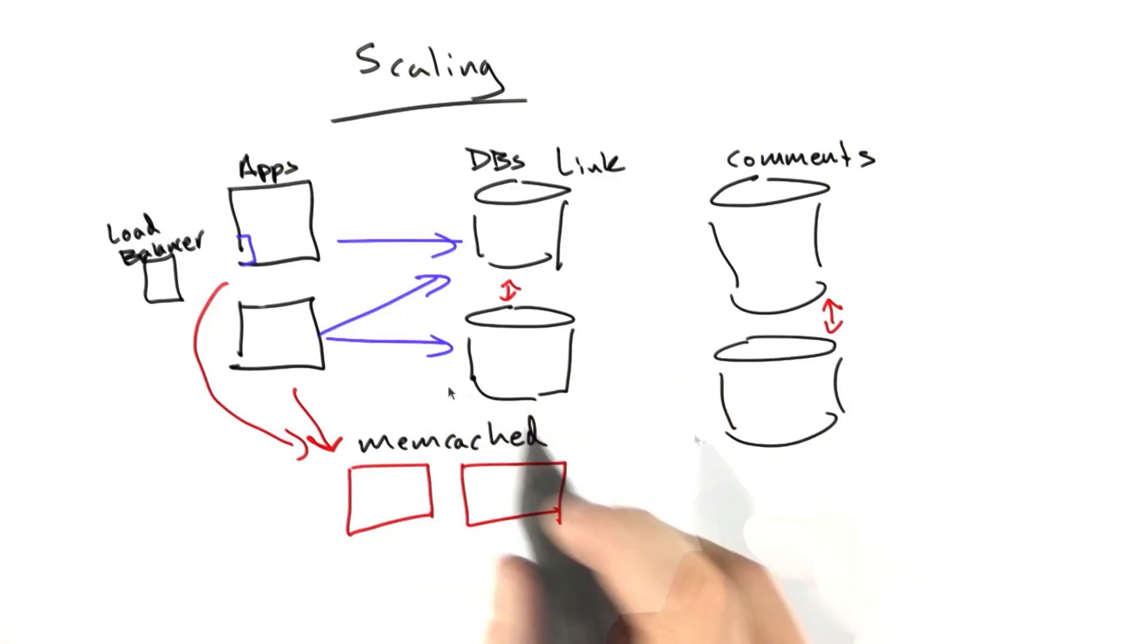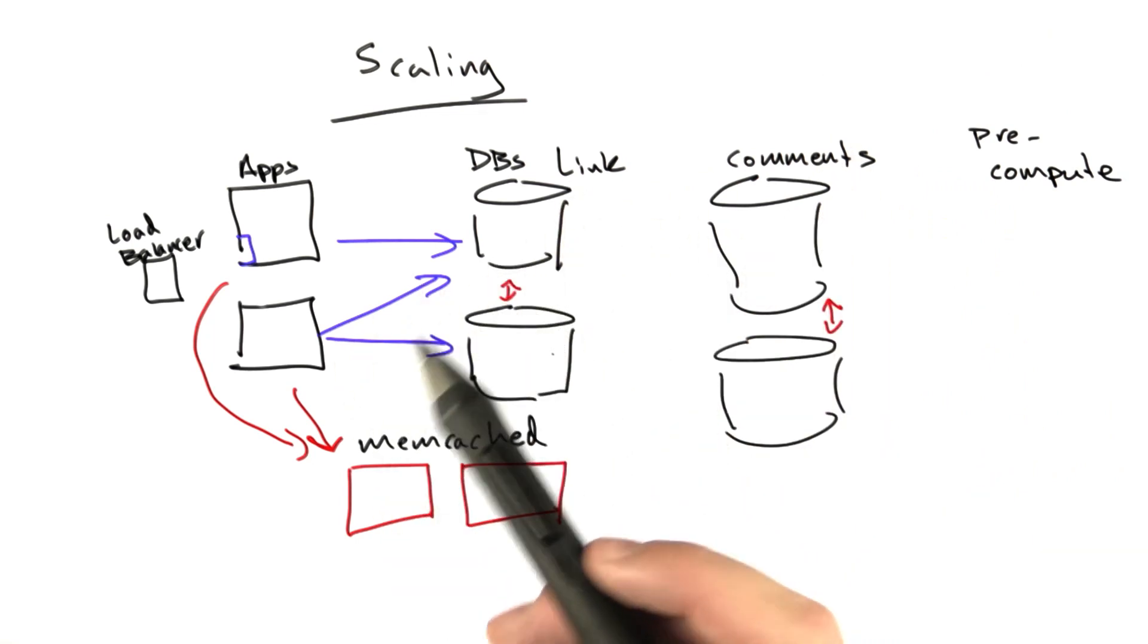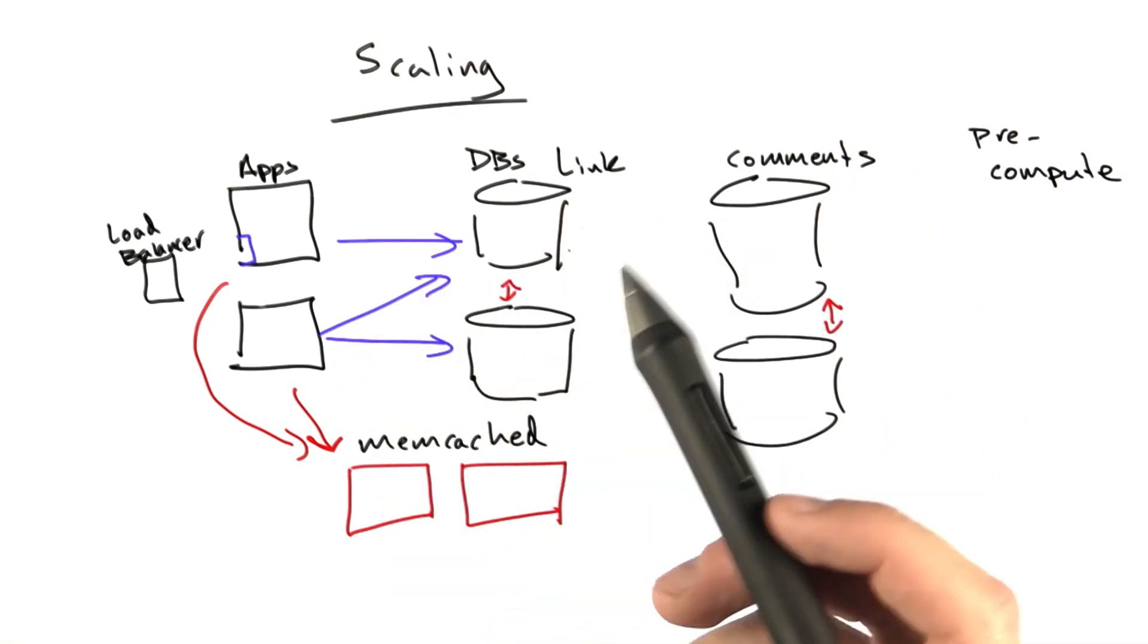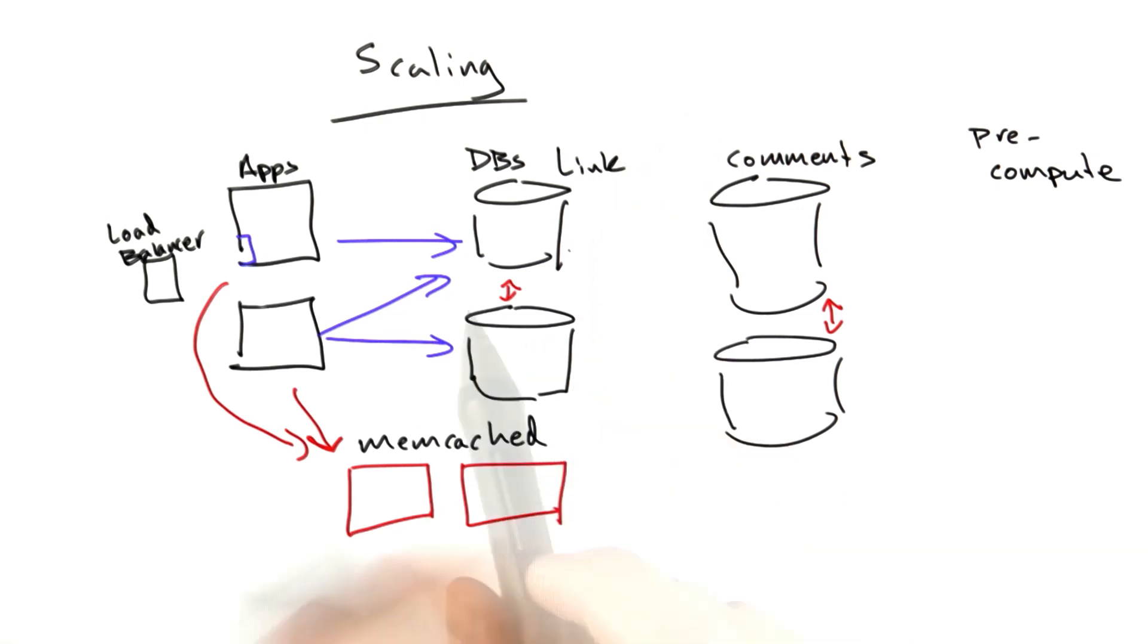One of the other big architecture pieces we added to help us scale was this notion of a pre-computed cache. We find ourselves running these queries to generate the hot page for Reddit over and over again. We may cache it for a minute, but then once that minute expired we had to recalculate it.